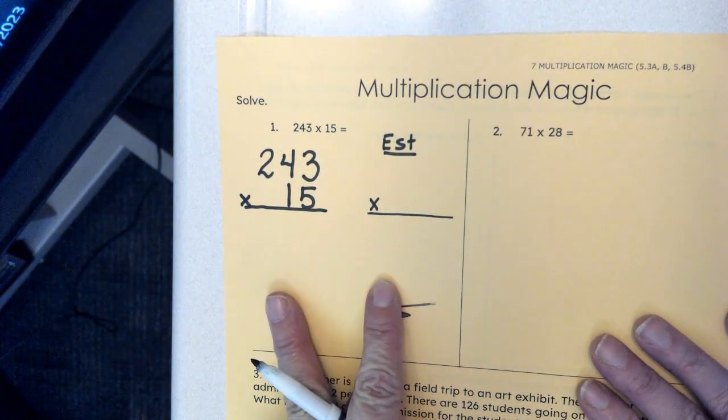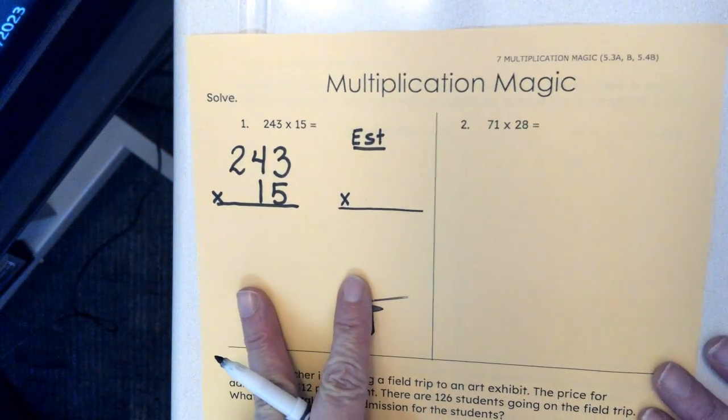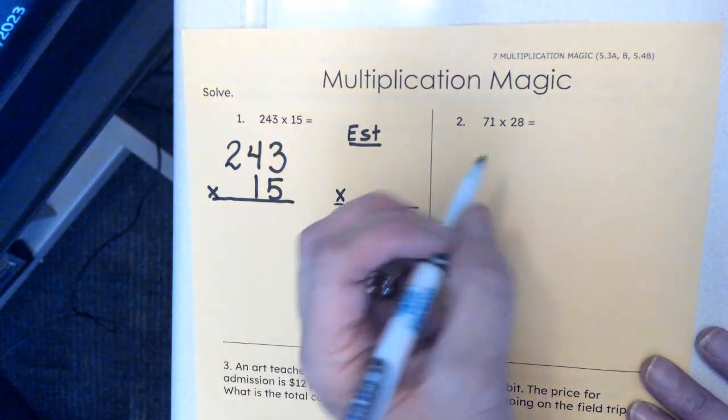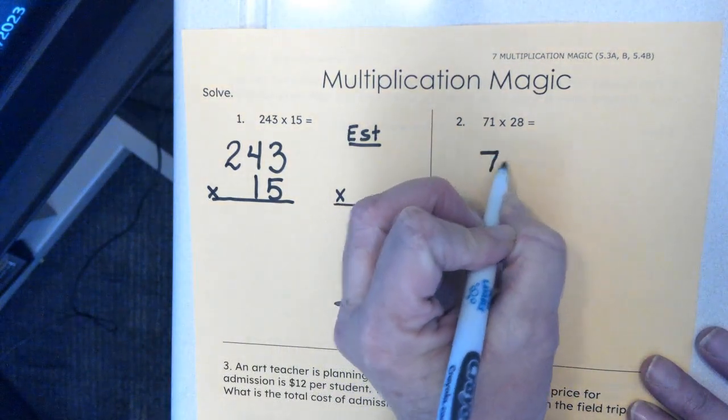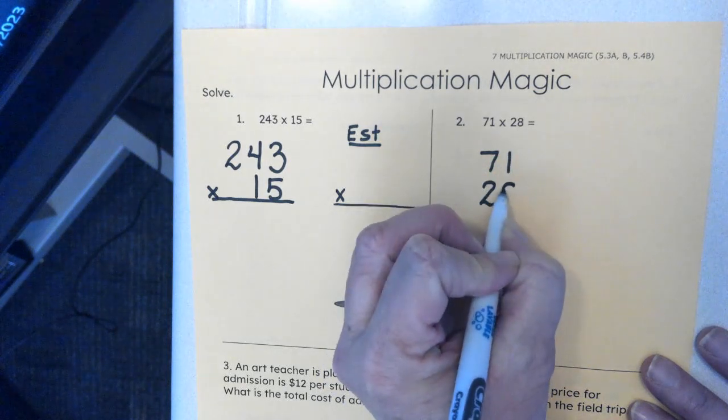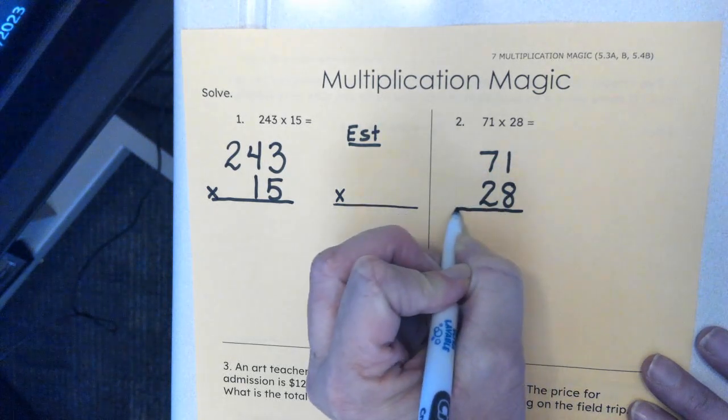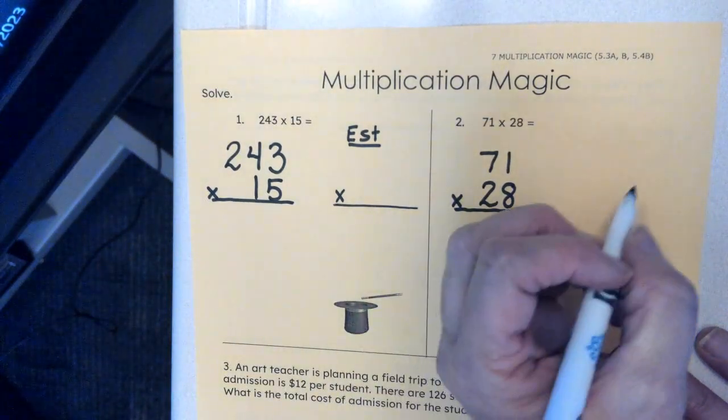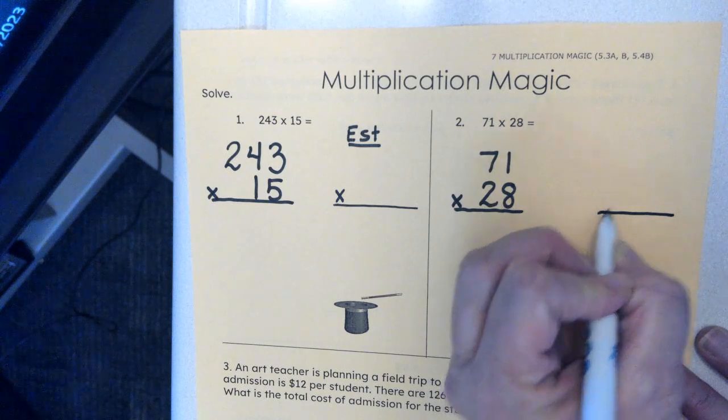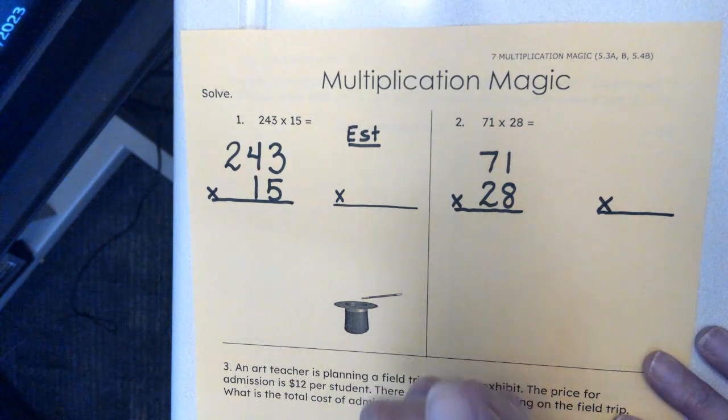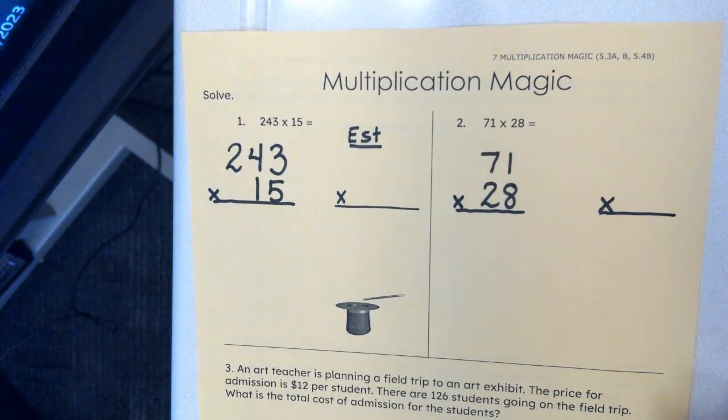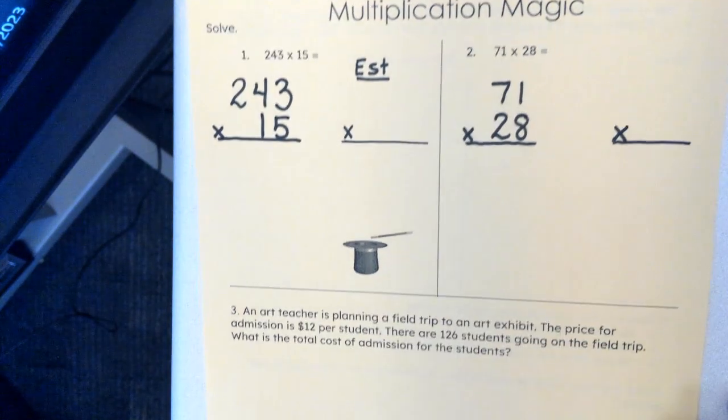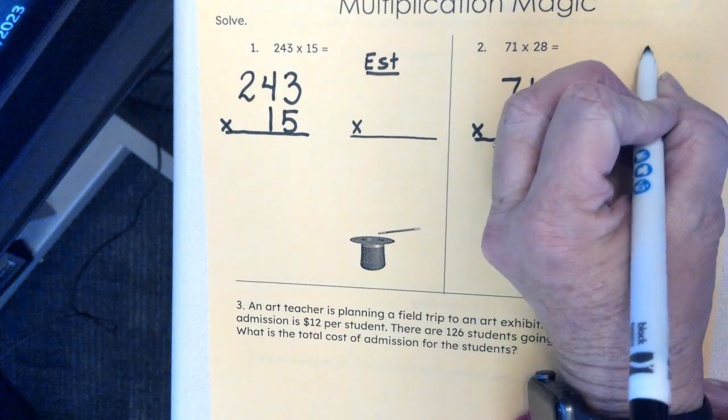That's going to count for two problems. Moving on over to number two, we have a two-digit number times a two-digit number, so we're going to set that up: 71 times 28. And then we're going to make our easy estimate over here to the side. Remember your easy estimate counts for points, so make sure you do that and you do it well.